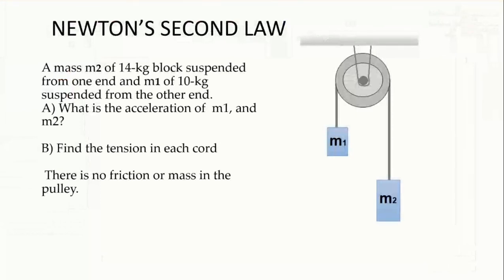In this example, we are going to talk about Newton's second law. We have what we call an Atwood machine — it is a machine that consists of a pulley. The objective of today is to find the acceleration of m1 and m2 and the tension in the cord. We suppose there is no friction and the pulley is massless.